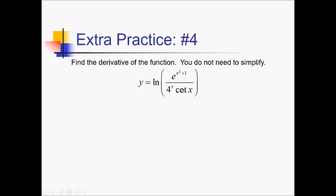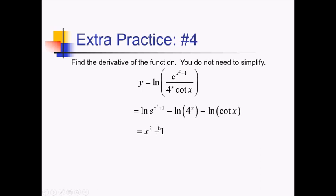On this problem, we want the derivative of this crazy expression. This could be a big chain rule with a product and a quotient rule inside. Or if we simplify using some log rules, we can save ourselves a little trouble. Using the rule that multiplication turns into addition and division turns into subtraction, I'll split up this log: we have ln of e to the x squared plus 1, minus ln of 4 to the x, and also minus ln of cotangent of x. The ln and e cancel, leaving just x squared plus 1. We can pop out the exponent, leaving minus x ln of 4, and ln of cotangent is just what it is.